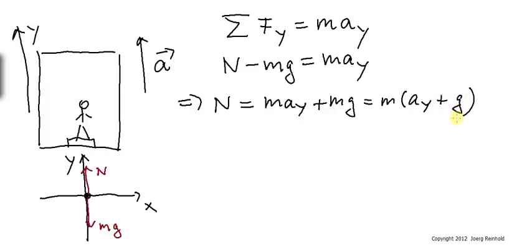From this we see that should ay be positive, that means it is accelerating upward, which means the normal force is greater than the weight. The scale reads more than the weight.